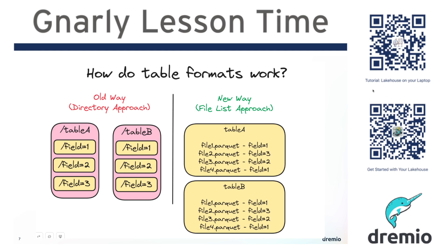More modern table formats like Apache Iceberg, Delta Lake, and Apache Hoodie moved to a different approach where they track the actual files that make up the table. The idea is you always know the exact files, you have stats on those individual files, and you can roll those stats up to table-level statistics. These statistics help avoid unnecessary file operations to speed up queries, enable fine-grained query plans, optimize transactions, and provide consistency guarantees, ACID guarantees, and concurrency guarantees that weren't possible before.